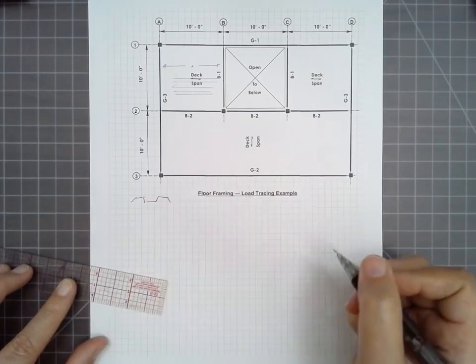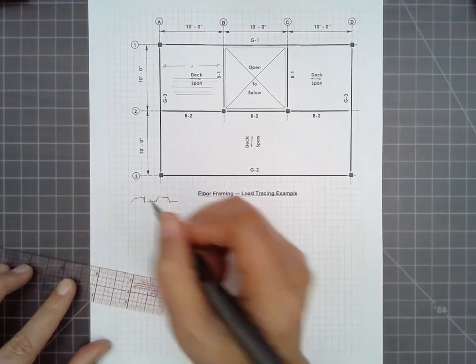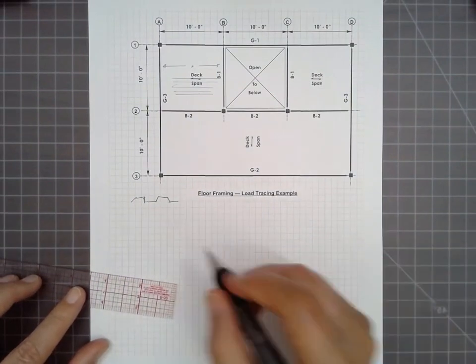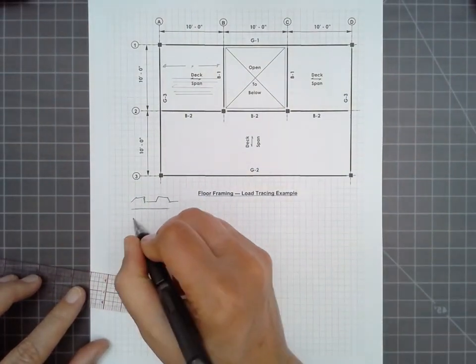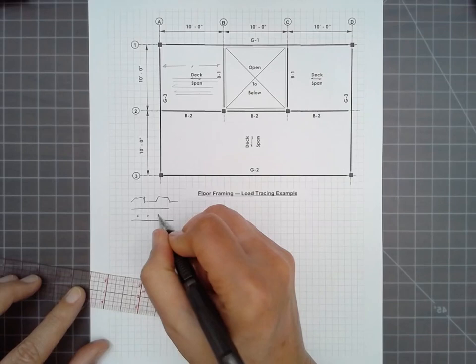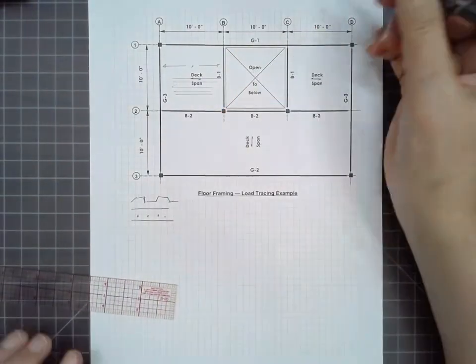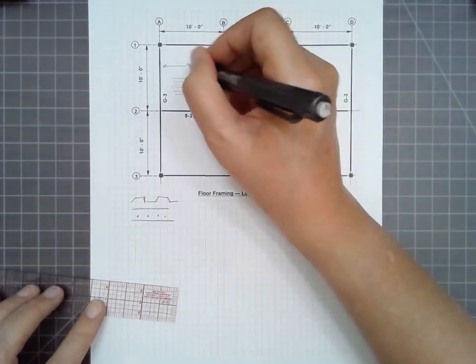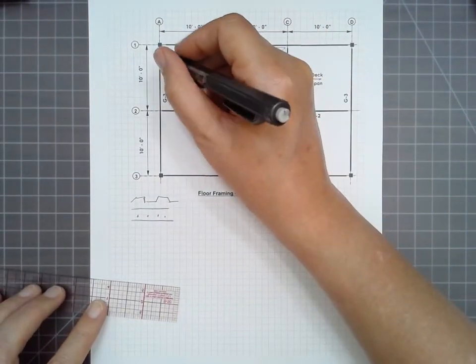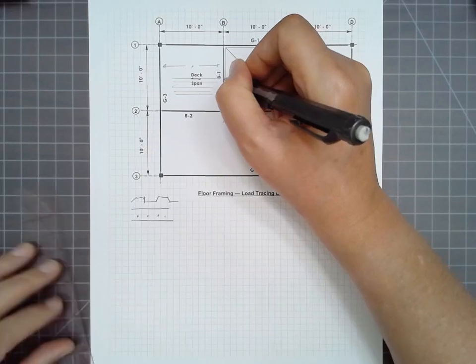So this deck is comprised of a fluted structure that looks corrugated in the plan. Typically with a steel deck, it may be concrete deck that has rebar, and the reinforcing runs in a particular direction. And the load is transferred then over to member G3 and B1.